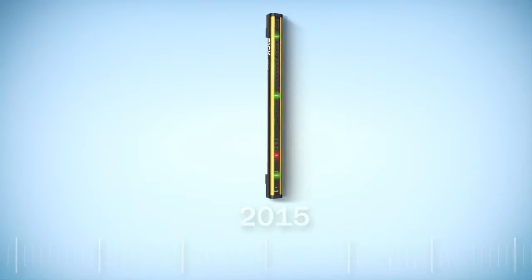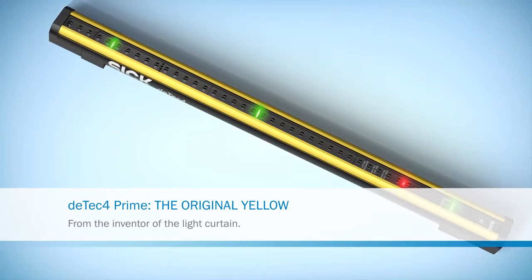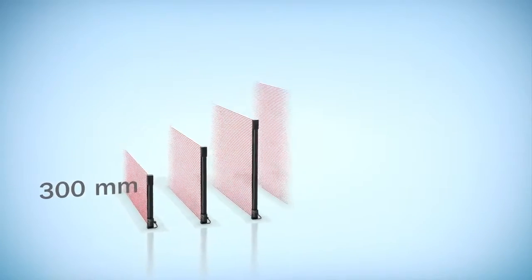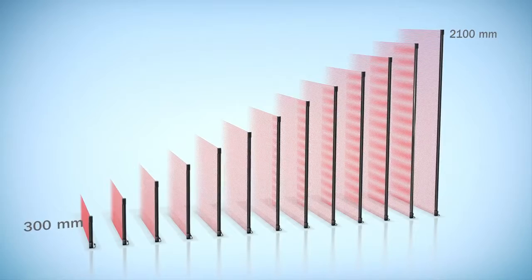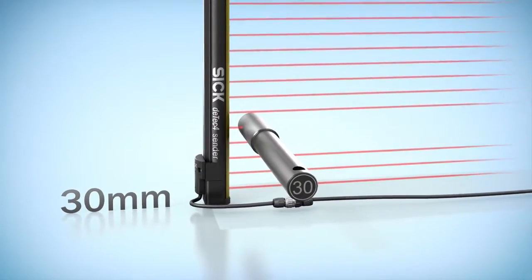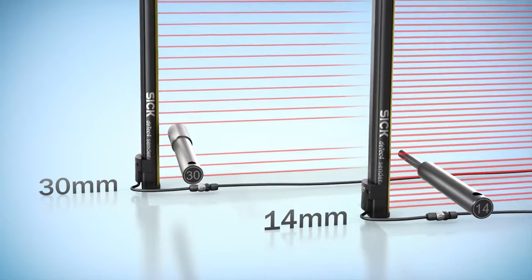And now, we are setting new standards with the best safety light curtain from SICK. The DTEK 4 Prime comes in 13 graduated protective field heights, with a resolution of 30 or 14 millimeters, for protection of hands and fingers.